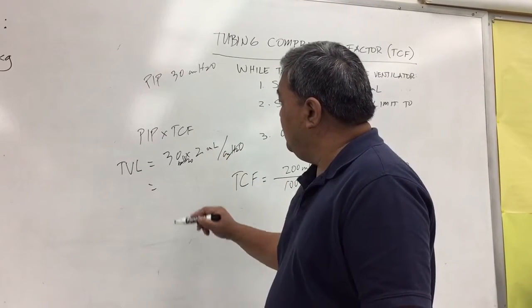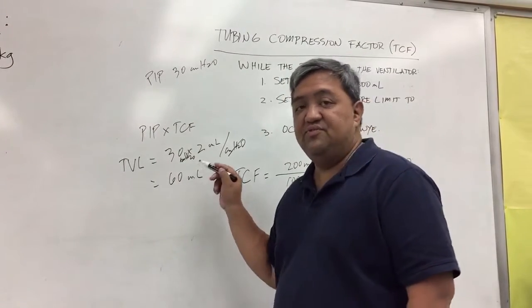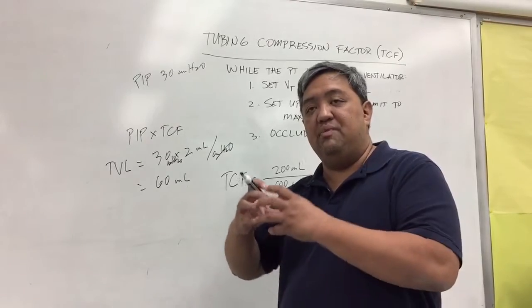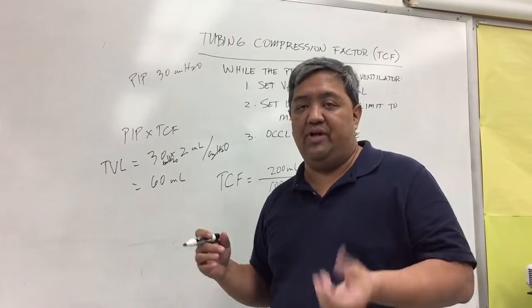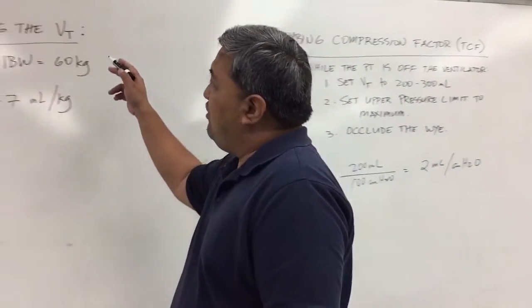Cancel that and your answer is 60 mls. That tubing volume loss of 60 mls is the volume inside the tubing that's not going into the patient.